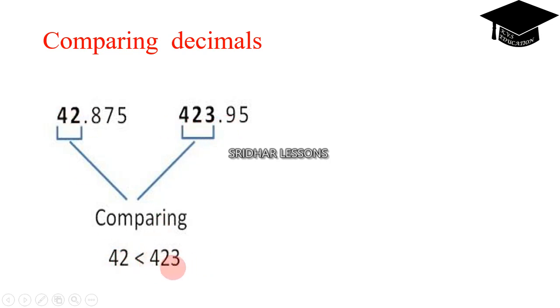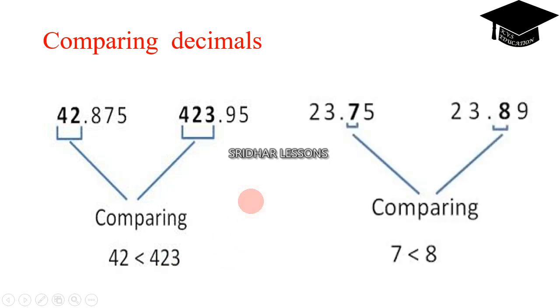42 is less than 423. Similarly here, 23.75 and 23.89. So we have to compare 23 and 23, these are equal. So the next one after decimal, the first value 7 and 8, since 7 is less than 8, so this number is less than this number. 23.75 is less than 23.89.